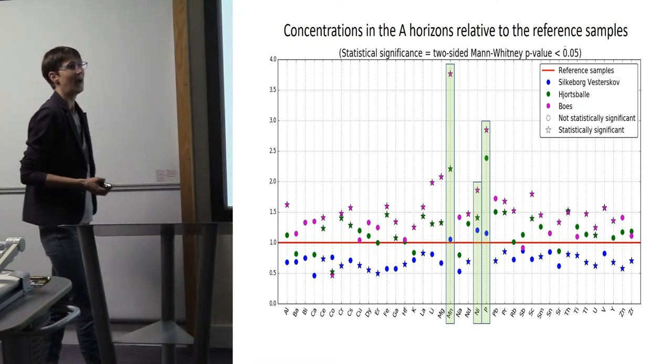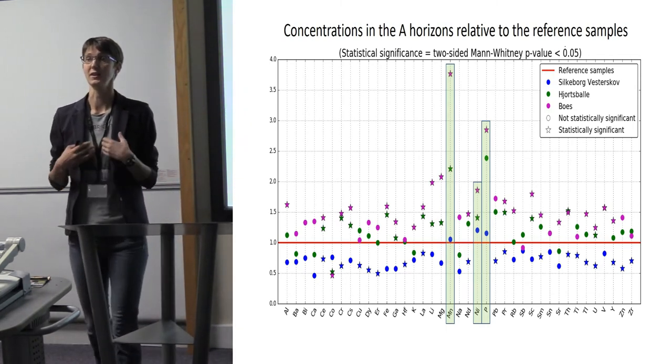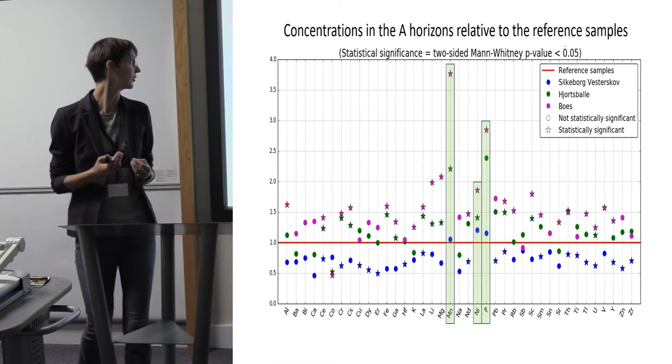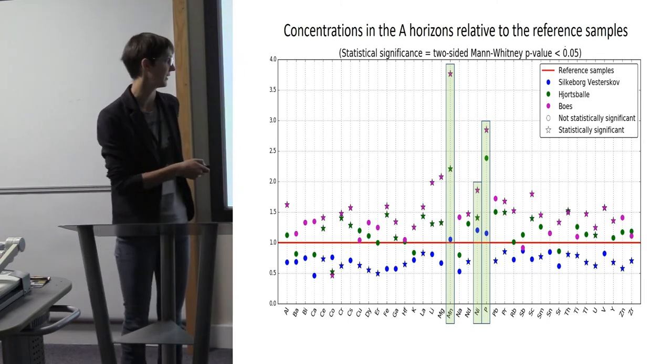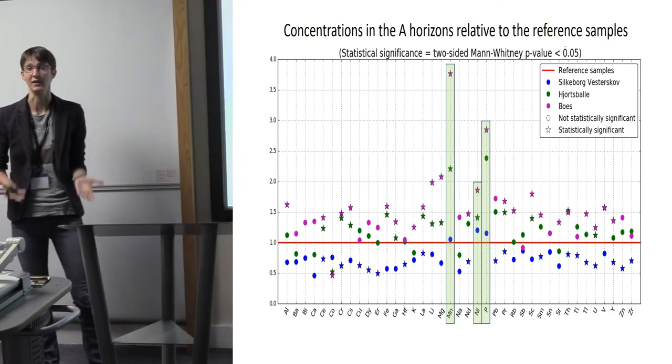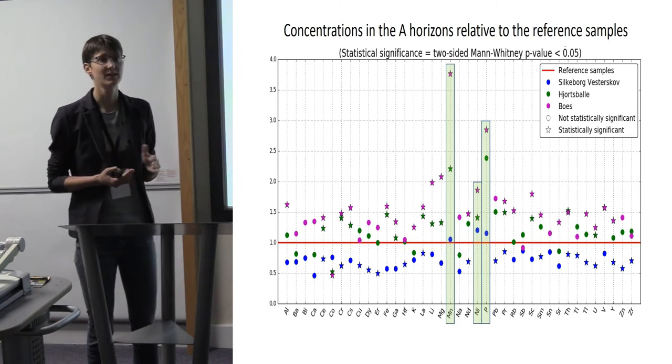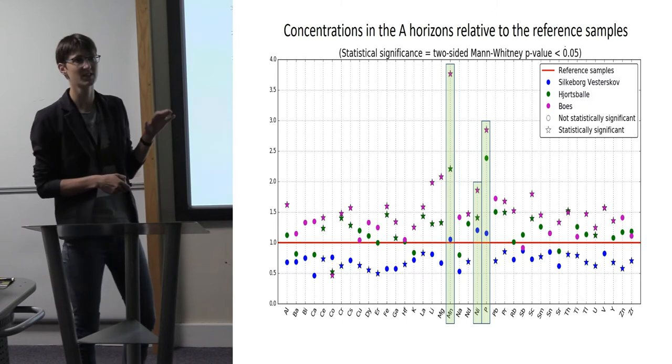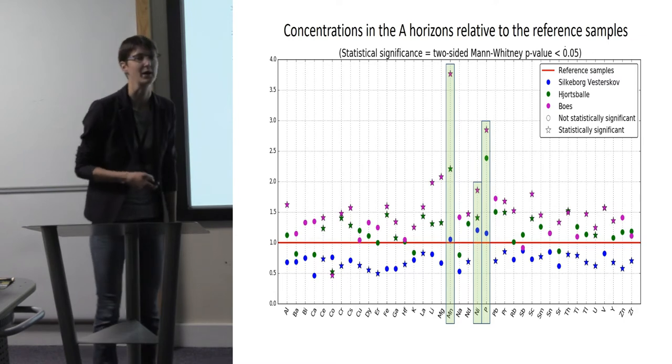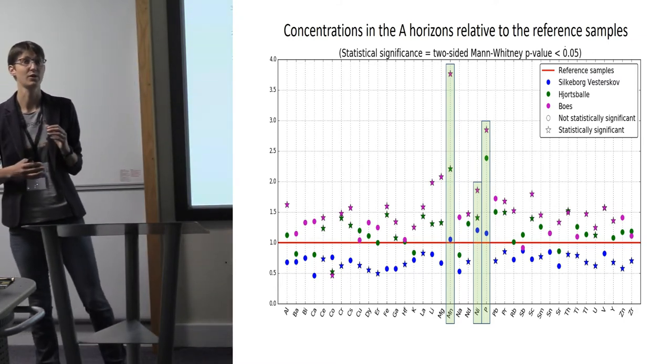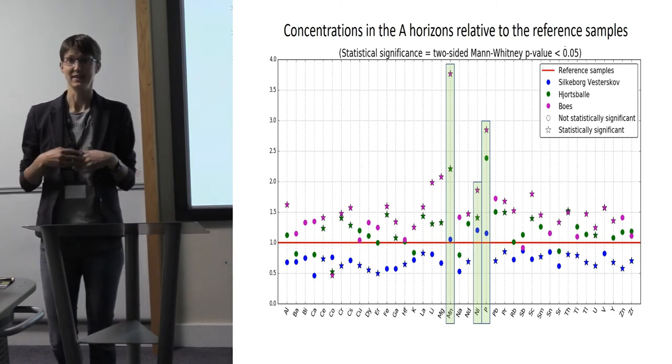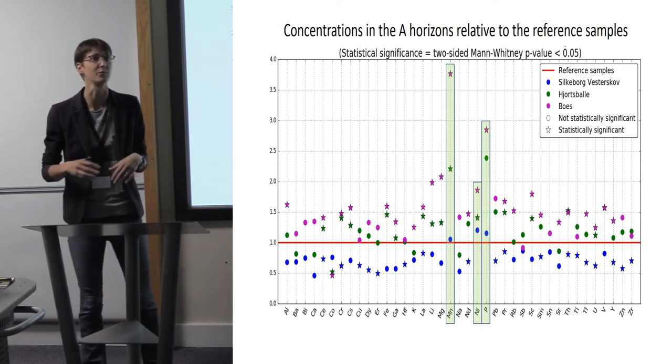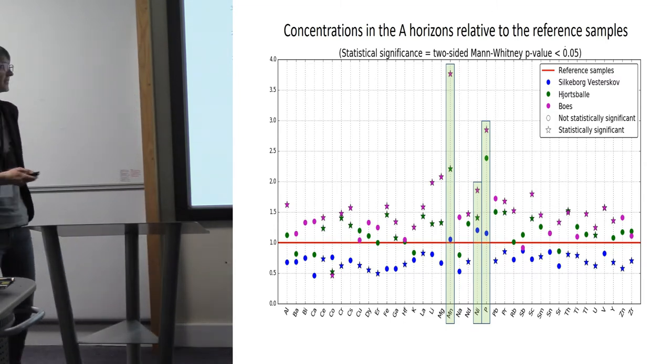There are three elements enhanced in all of these sites: manganese, nickel, and phosphorus. At Østerlemhede, phosphorus and manganese were the elements we identified as markers for probably animal manure. These were quite good for identifying this, and now at these sites we see manganese and phosphorus being enhanced. Silkeborg-Vesterskøv is only slightly enhanced while we see more enhanced values at Hjordsbælle and Boeskål. When considering that these are much smaller field systems, this might make sense because the manure must have been concentrated on a smaller number of fields.